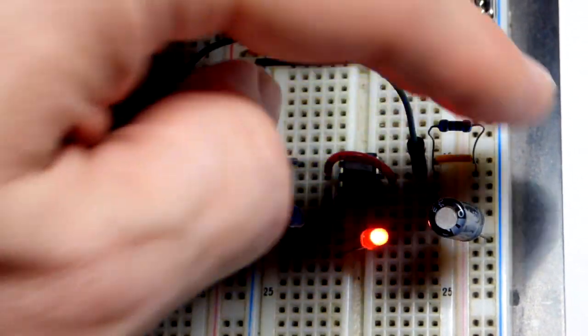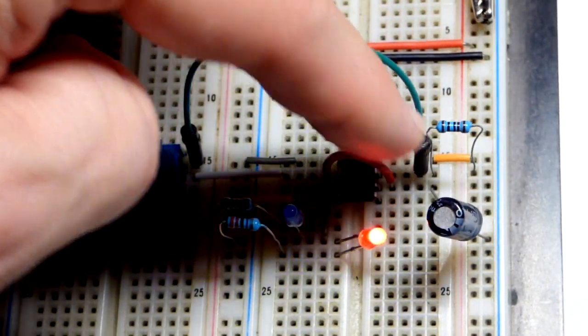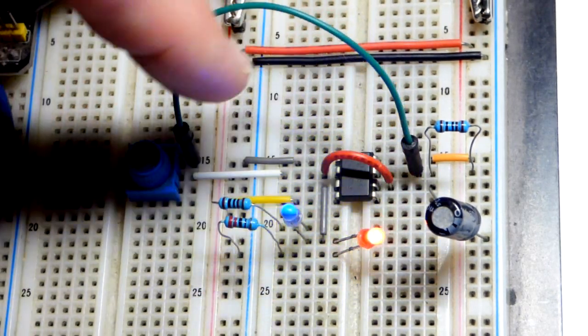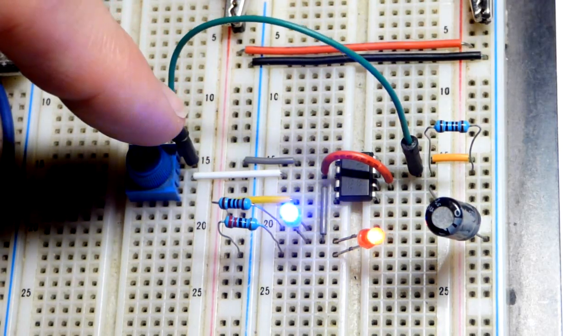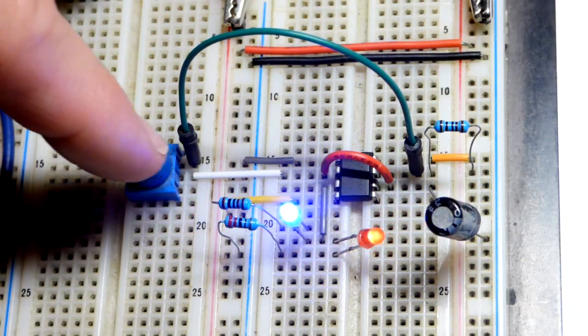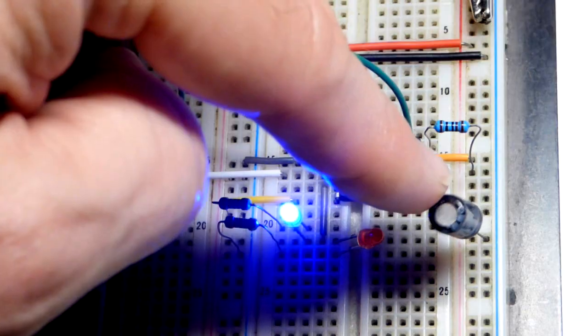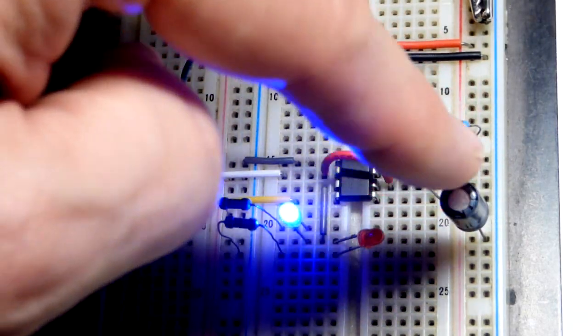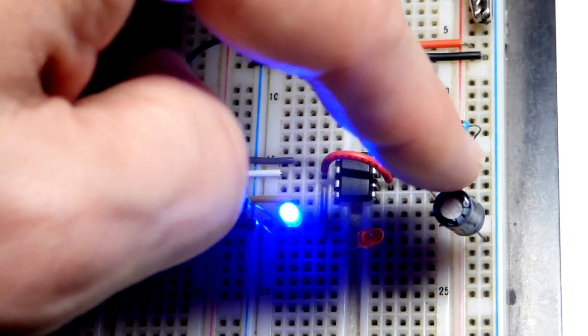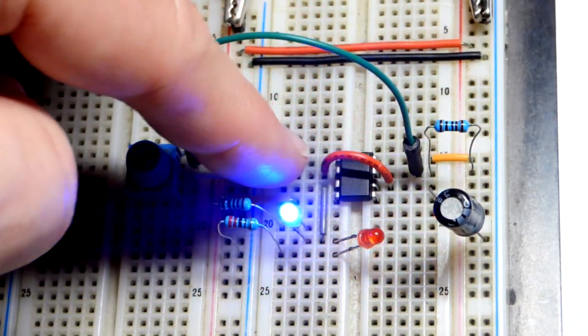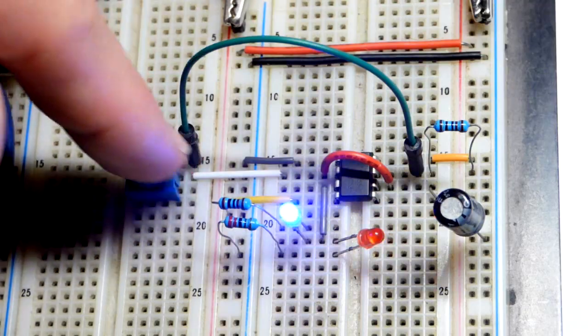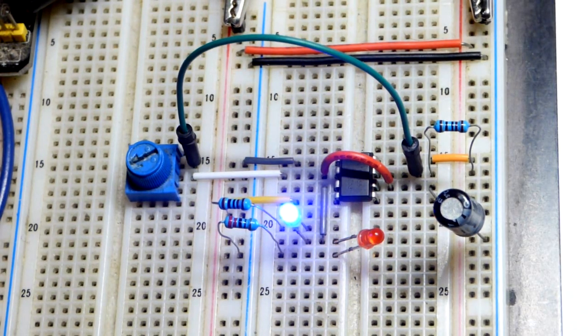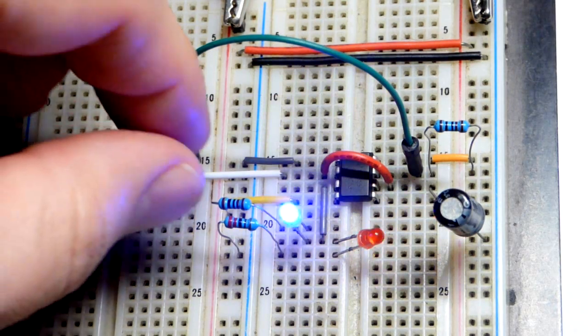So while the output is high the current is going through that resistor, through this jumper because it's like an off switch when the output is high, and then through however much of the resistive element I have set, and then to charge the capacitor. Then when the output goes low that connects to ground. Any current through that resistor just goes to ground. But the capacitor discharges through whatever resistance we set, and then it goes pretty much directly to ground there.